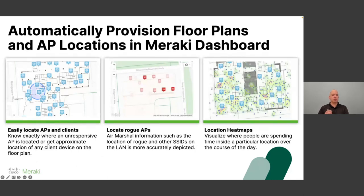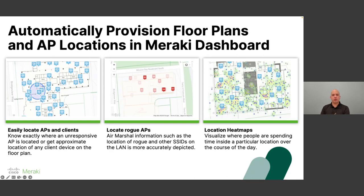With more precise AP locations, you can much more accurately find various clients on the dashboard. If you're trying to locate a rogue AP placed somewhere in your building, you get a more accurate location. Location heat maps and any other location-based services run on top of your network will be driven through the floor maps, so the accuracy of the access points determines the accuracy of the applications consuming that data. For the 71% who answered they're doing it manually, there is a better way — check it out on the Meraki marketplace.